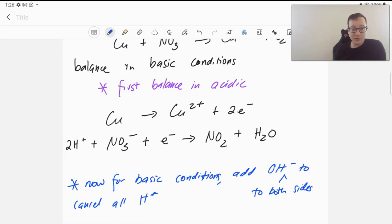However, if we want to get rid of those H+, we know we need to put in the same number of hydroxides. If we add two hydroxides to both sides, this now becomes two waters.